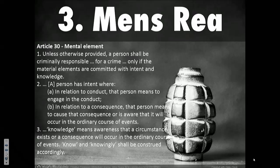The next important idea in international criminal law is mens rea — the mental element of a crime. Not every act that might result in death or injury or another wrong is obviously a crime. What we usually accept is that there must be an accompanying relevant mental state for a crime to be committed. The ICC statute requires that, unless provided otherwise, a person shall be criminally responsible for a crime only if the material elements are committed with intent and knowledge. Along with the ICC statute, we will become familiar with the elements of crimes, which spell out the material elements — the actions or consequences that make up a crime — and also the required mental elements.